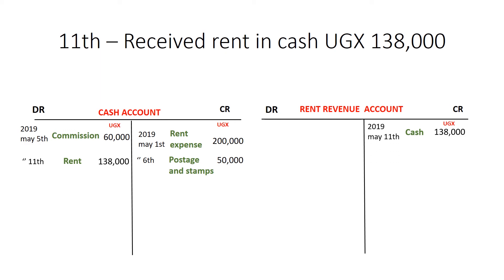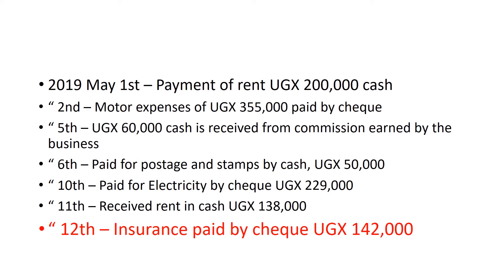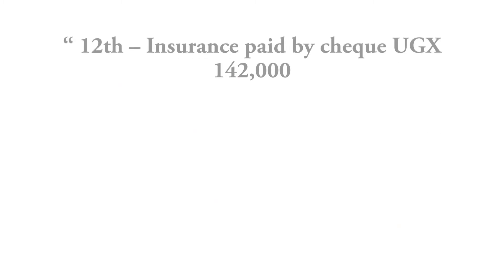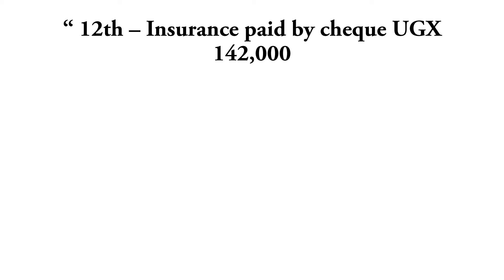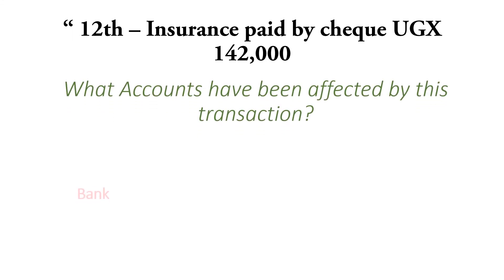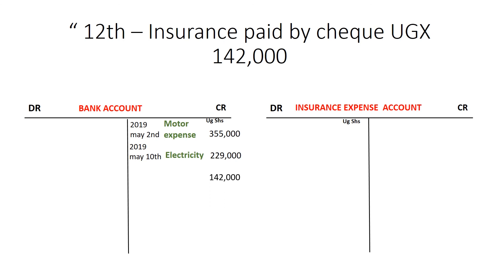On the 12th, insurance paid by check is 142,000. Insurance is an expense, and it was paid by check, so the money in the bank is what is being affected. The bank has reduced since we are using it to pay for insurance, and the insurance expense has increased. Bank being an asset, reductions in assets are credited, so we credit the bank account with 142,000 Uganda shillings. We finish this double entry by debiting the insurance expense account by 142,000. The other item affected is bank, and this took place on May 12th.